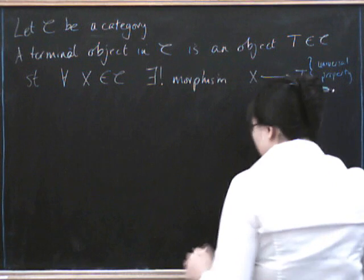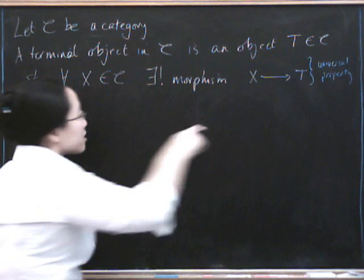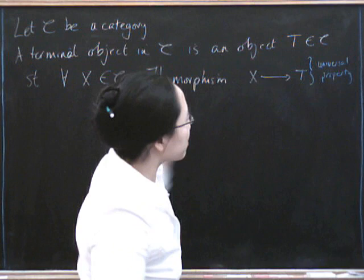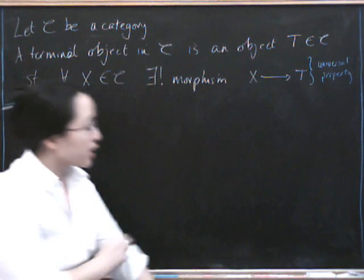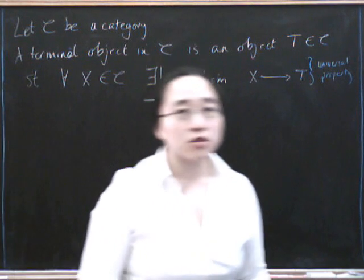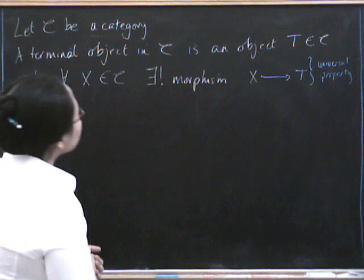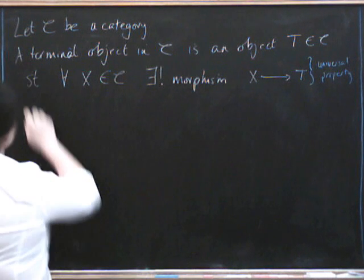The part saying among all objects, this one is the one that has a unique morphism going to it from everything else. Incidentally, these are also sometimes called final objects. So let's immediately have some examples.